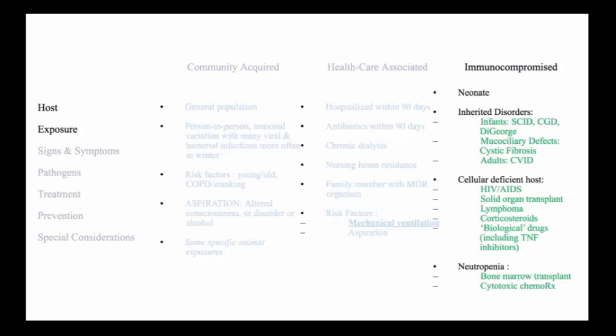There are many categories of immunocompromised hosts, including neonates, who by definition have an immature immune system and are susceptible to specific pneumonias. Inherited disorders, most importantly involving mucociliary defects, including cystic fibrosis, predisposed to chronic pneumonias.